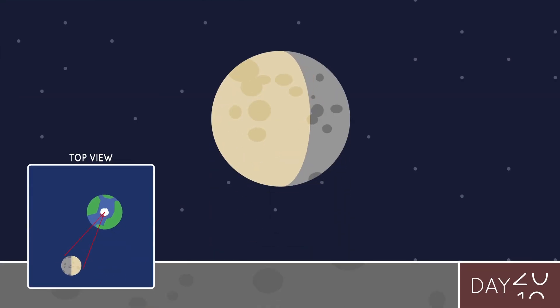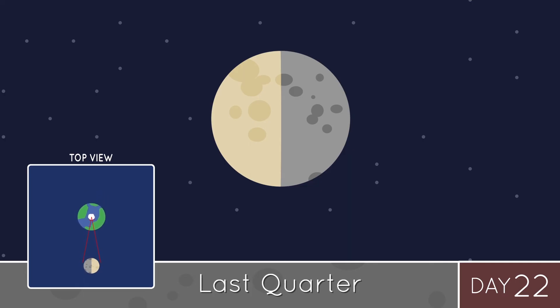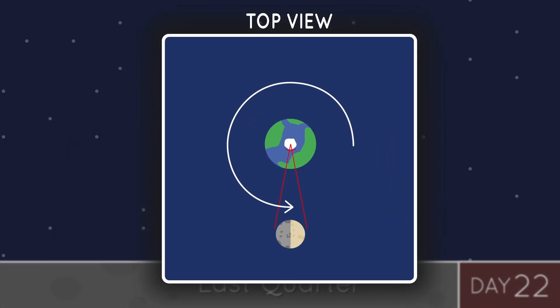Next, we have an even split of light again. This time, we call it a third quarter, or a last quarter, because the moon only has one more quarter to go.